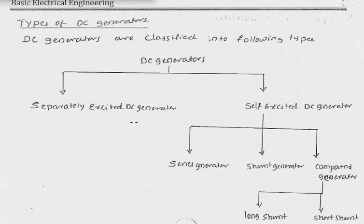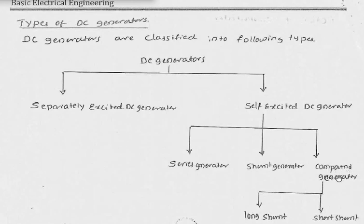In a separately excited generator, the field winding is excited from an external DC source. In a self-excited DC generator, the field winding is supplied from the same DC generator's output. Self-excited DC generators are classified into three categories: series generator, shunt generator, and compound generator.